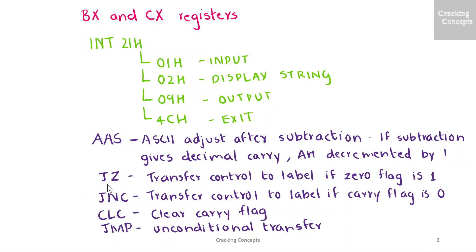JZ stands for jump if zero, which transfers the control to the label following it if the zero flag is 1. JNC stands for jump if not carry, which transfers the control to a label if the carry flag is 0. CLC stands for clear carry flag, and JMP is to perform unconditional transfers.